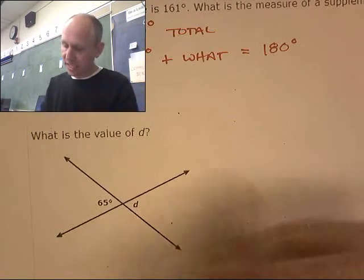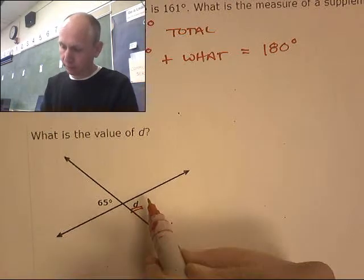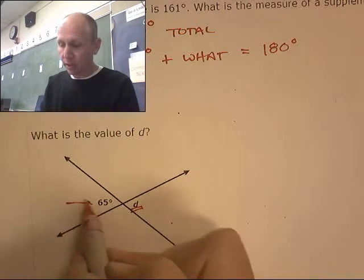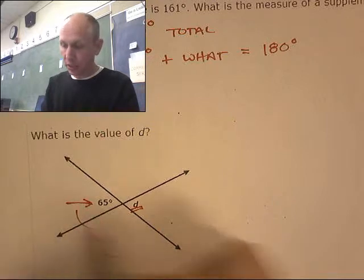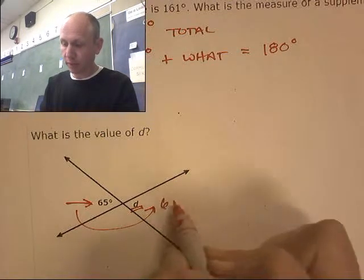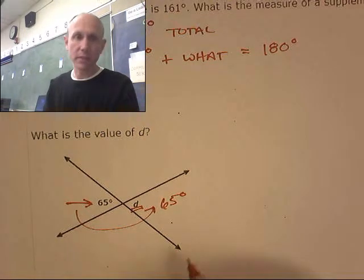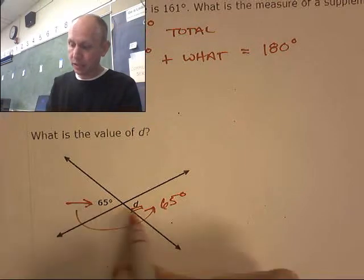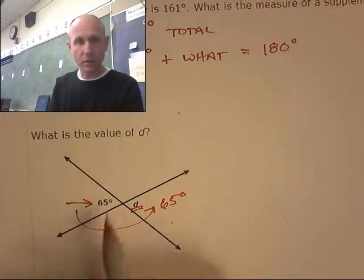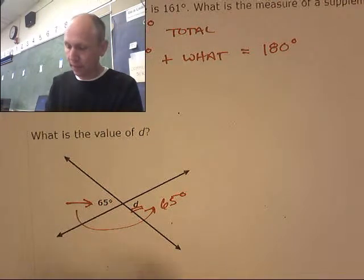What is the value of D? Here's D right there. Well its vertical angle is 65 degrees. So D is also 65 degrees. Because D is vertical to the other side. That's 65 degrees.